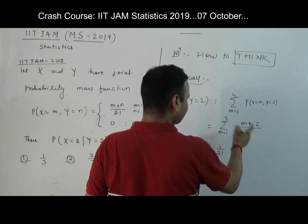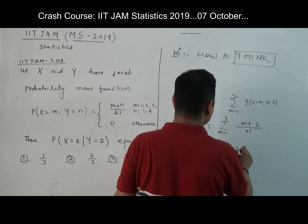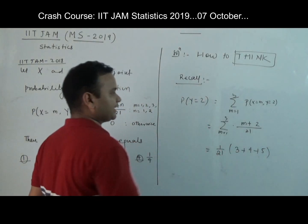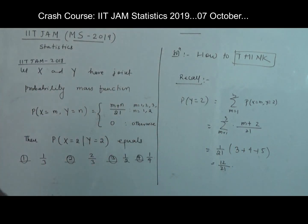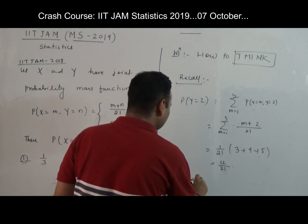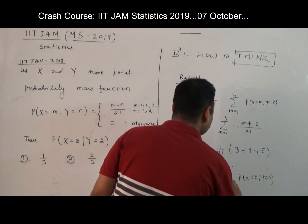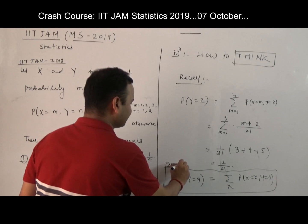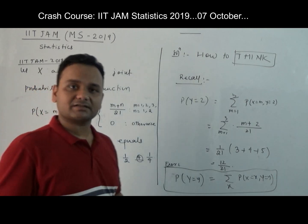This is nothing but M plus 2 by 21. Let's take 21 outside. This sum will be: when you put M equals 1 you get 3, put 2 you get 4, put 3 you get 5. So 3 plus 4 plus 5 equals 12. This is 12 by 21. So this is the probability of Y equal to 2. In general, probability of Y equal to y is the sum over all x of probability of X equal to x and Y equal to y. So this is the marginal.